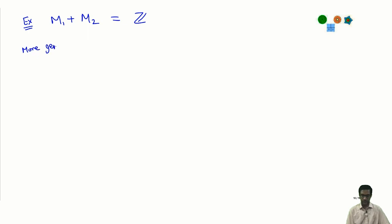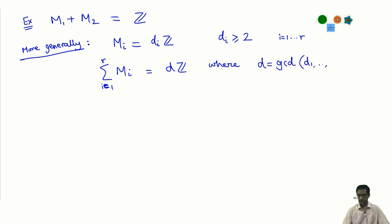More generally, you can prove this using either of the two descriptions. More generally if I take submodules of z which are all of the following kind various multiples, let d i be integers which are at least 2. If I have a finite collection of submodules, this is i goes from 1 to some r. I take these multiples of d 1 multiples of d 2 and so on then their sum. This is a submodule of z i equals 1 to r show that this is nothing but d z it is again a submodule of the same kind where d is nothing but the GCD of all these numbers.